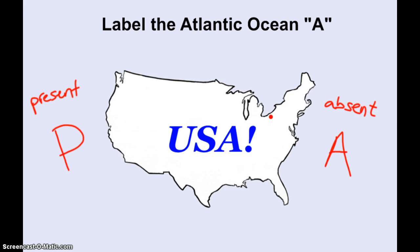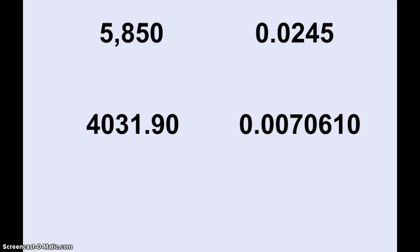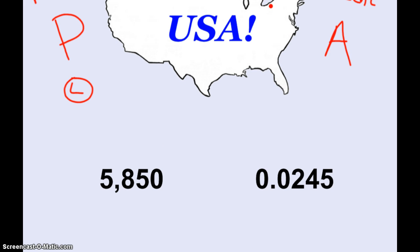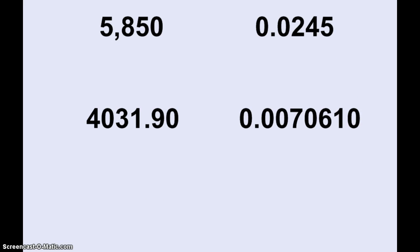And what we're going to turn Pacific and Atlantic into is present or absent. So when we look at a number, a measurement, we look to see whether or not a decimal point is present or absent. If a decimal point is present, then we start on the left of the number and cross out zeros until you get to the first non-zero, and that will tell you how many sig figs there are. If the decimal point is absent, you start on the right side of the measurement, the numbers, cross out zeros until you get to a non-zero, and that tells you how many sig figs.